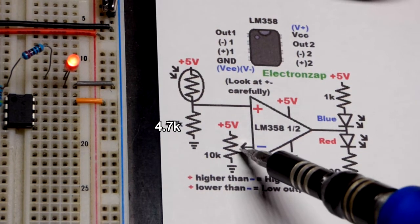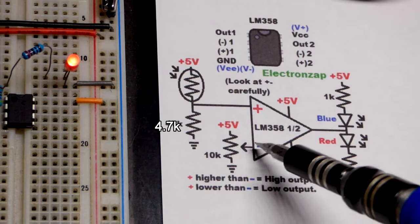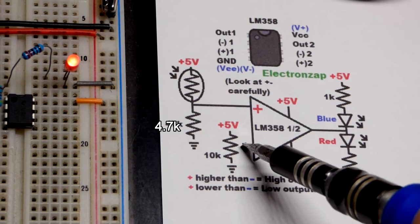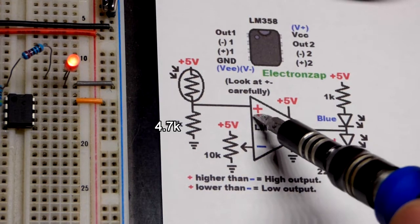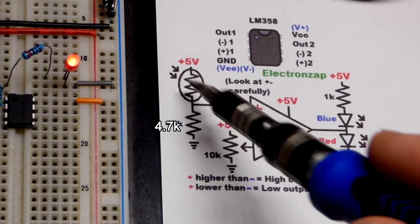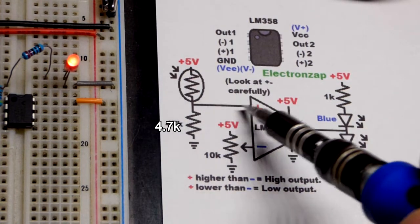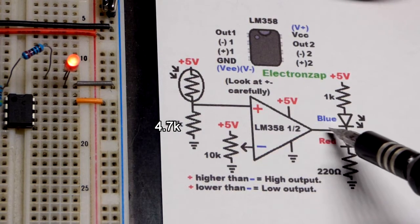Then we have a trim pot where we can adjust the voltage to whatever we want. So we're just kind of adjusting it based on what we see at light levels. So when the non inverting input is higher because enough light is falling on the light dependent resistor the output goes high.